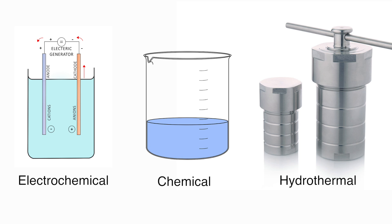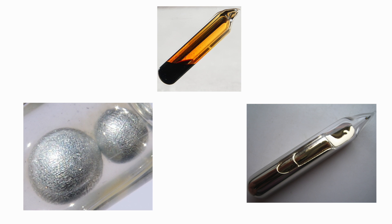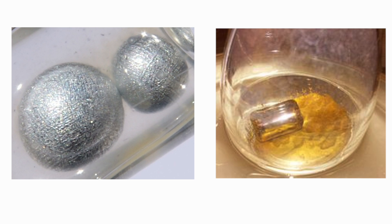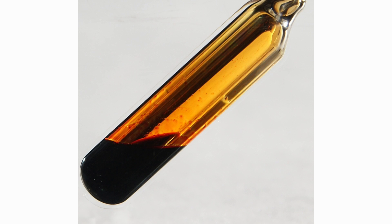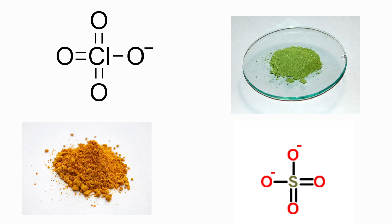There are many different approaches to intercalating graphite, and the method greatly depends on what you're trying to intercalate. For things like alkali metals or halides, it's usually sufficient to apply the elemental material to graphite. For potassium, this means melting potassium in a container with graphite, or for bromine, this means exposing graphite to gaseous bromine. For non-elements — things like metal halides, sulfites, perchlorates, and more — the process is usually a bit more involved.